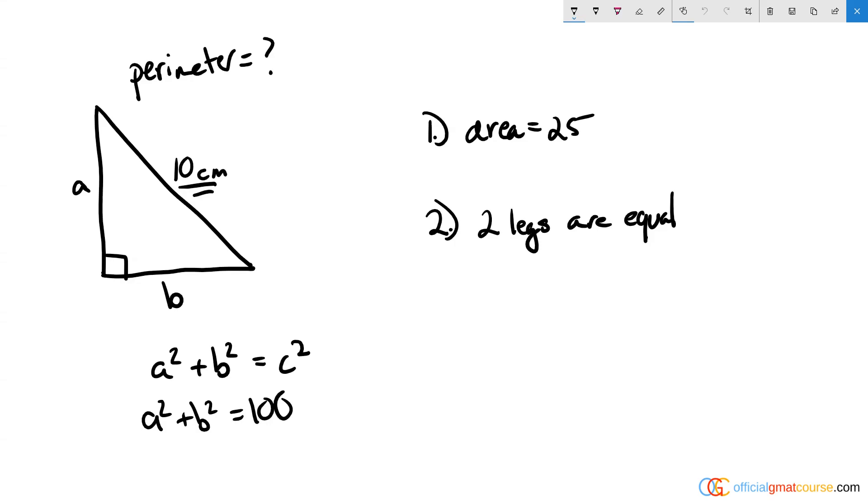Alright, so we have a data sufficiency value question. We're asked for the perimeter of this triangle, and we know it's a right triangle, so it follows the Pythagorean theorem: a² + b² = c². Since we've been told that the hypotenuse is 10, that means c² equals 100.